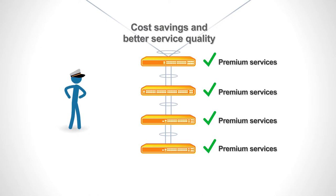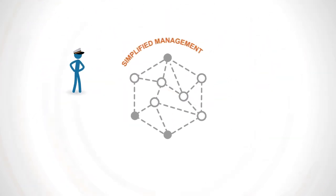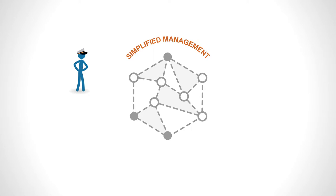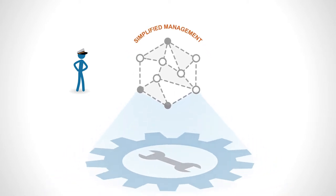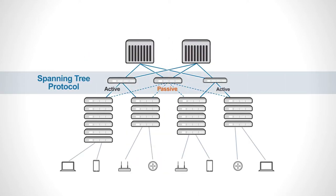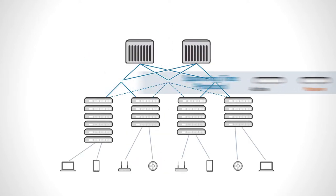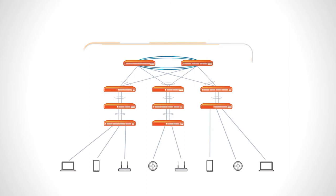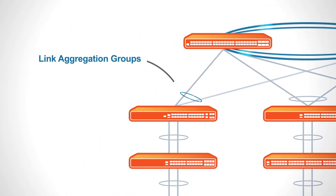Simplified management and consistent features across the network lower the time and expense of maintaining and troubleshooting the network. Eliminating the spanning tree protocol eliminates the waste of active-passive redundant paths. Link aggregation groups form automatically across redundant paths to protect against link failure.